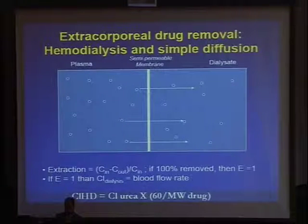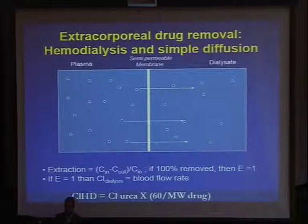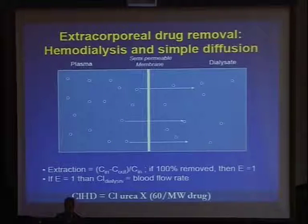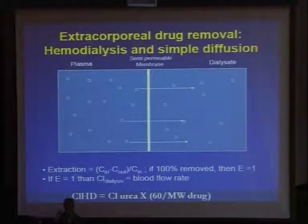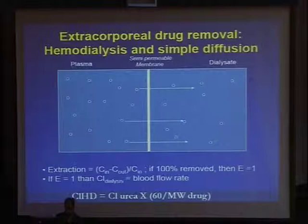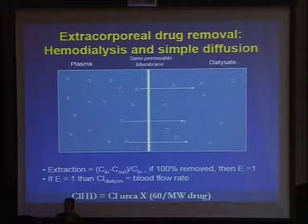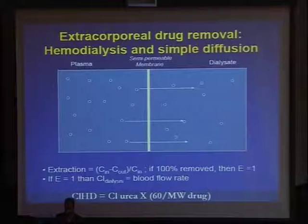There is another equation to find out clearance by intermittent hemodialysis, which equals the clearance of urea multiplied by 60 and divided by the molecular weight of the drug. You are not going to be doing these calculations yourselves — these are all present in nomograms. I'm just telling you how these things are calculated.